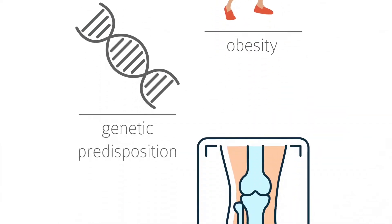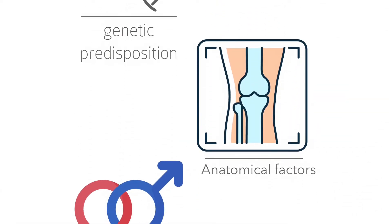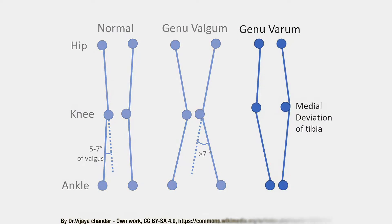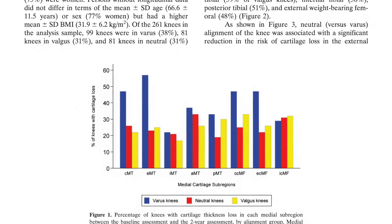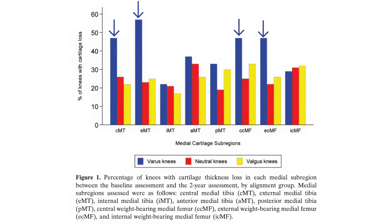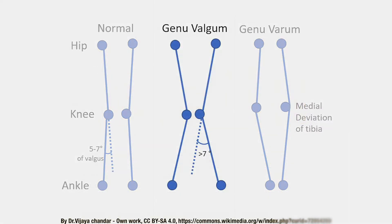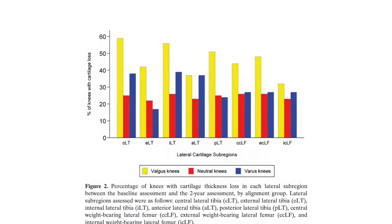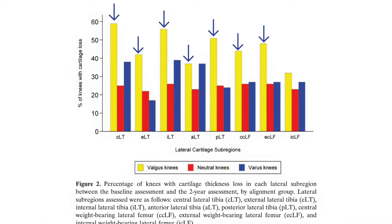Anatomic factors like the shape of the joint can influence the development of OA. An important anatomic factor related to knee OA is lower extremity alignment. Individuals who have varus alignment — those who are bow-legged — are at increased risk of medial tibial femoral OA, while those with valgus alignment — those who are knock-kneed — are at increased risk for lateral tibial femoral OA.